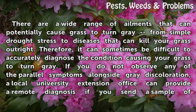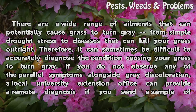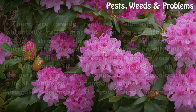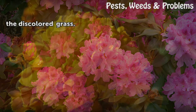There are a wide range of ailments that can potentially cause grass to turn gray, from simple drought stress to diseases that can kill your grass outright. Therefore, it can sometimes be difficult to accurately diagnose the condition causing your grass to turn gray. If you do not observe any of the parallel symptoms alongside gray discoloration, a local university extension office can provide a remote diagnosis if you send a sample of the discolored grass.